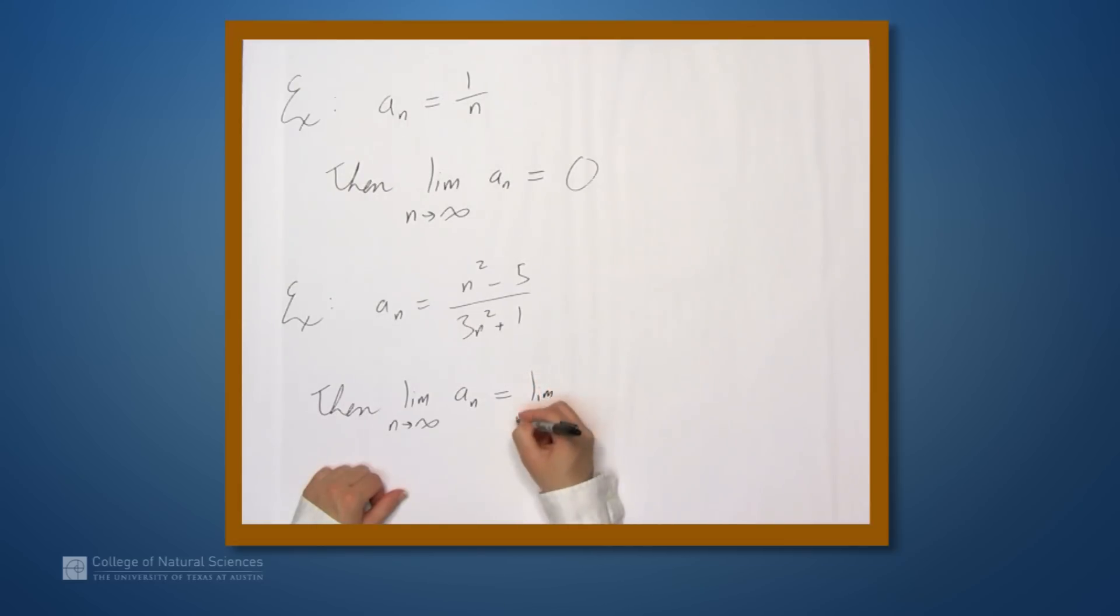And we get limit as n goes to infinity. n² over n² becomes 1, and then minus 5 over n². We're multiplying 5 by 1 over n² divided by 3, right, 3n² divided by n² is 3, plus 1 divided by n².